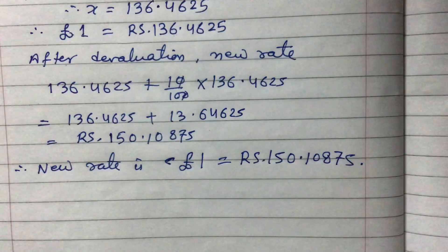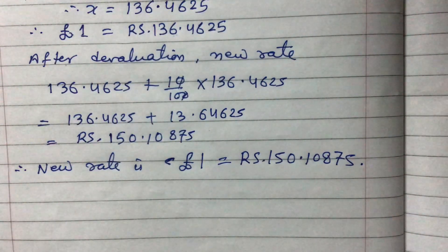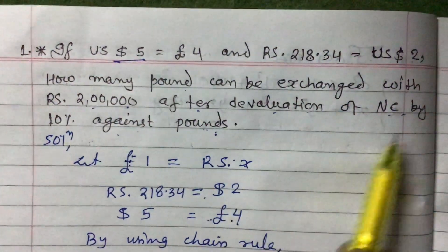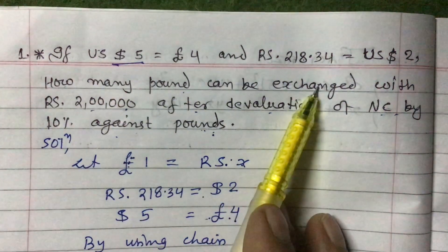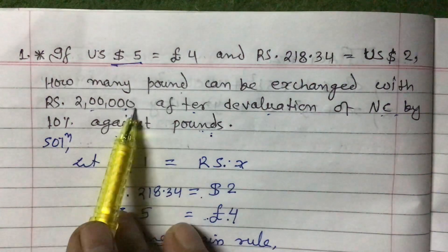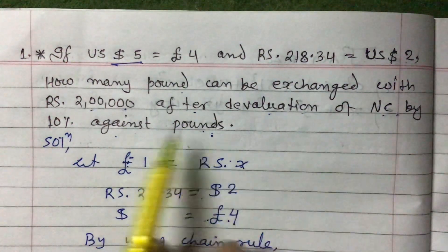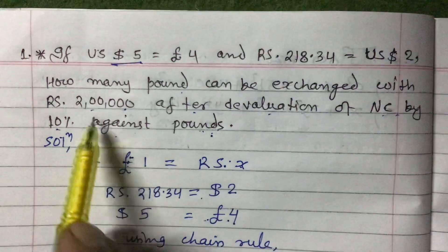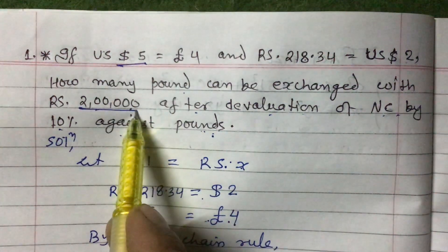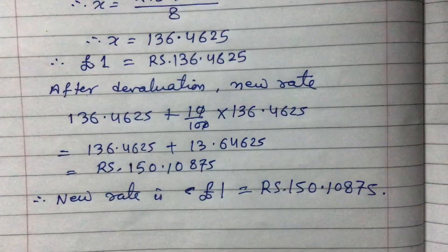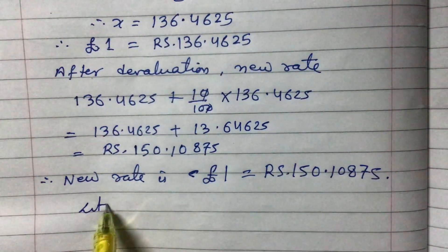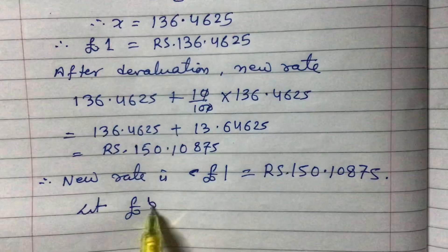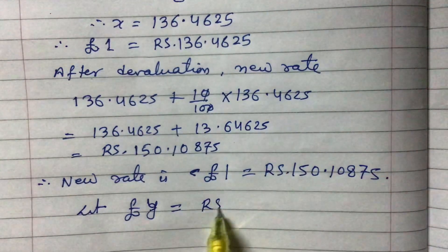According to this new rate, the question asks: how many pounds can be exchanged with rupees 2 lakh after devaluation by 10% against pound? Our new rate has been calculated. Rupees 2 lakh is Nepalese currency — let us suppose pound y equals rupees 2 lakh. We need to find y.